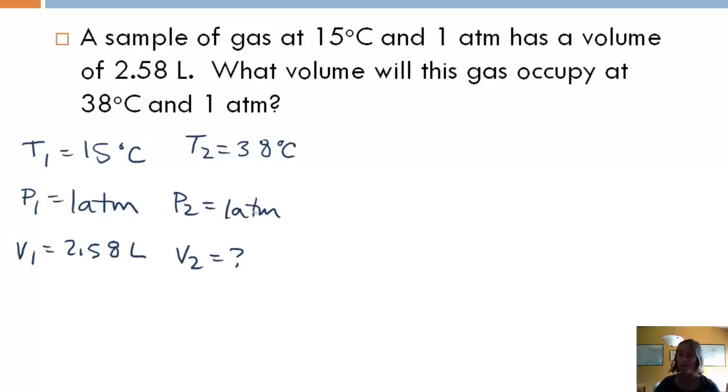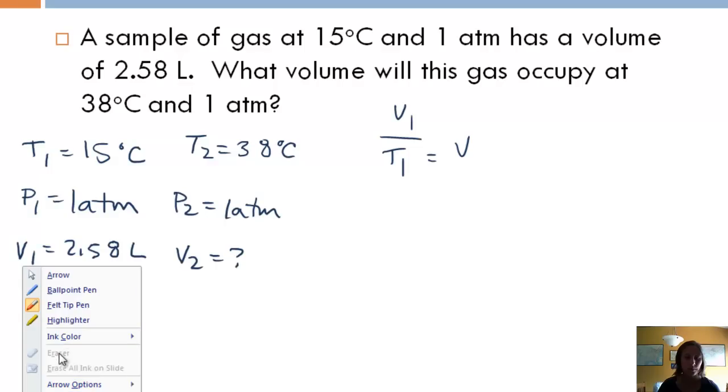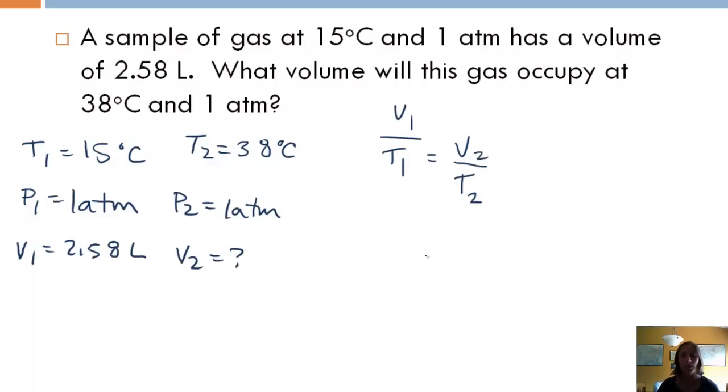Well, if we have a relationship, V1 over T1 equals V2 over T2. So we want to solve for V2. I'm going to multiply T2. So V1 times T2 over T1 gives me V2.